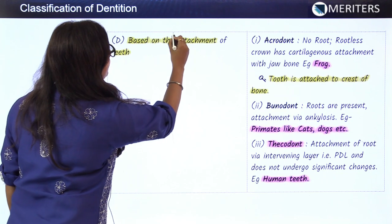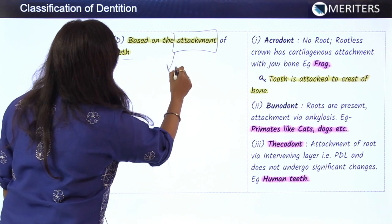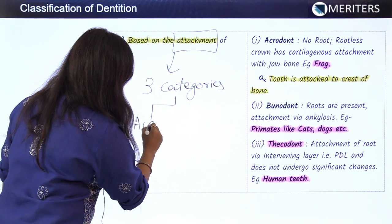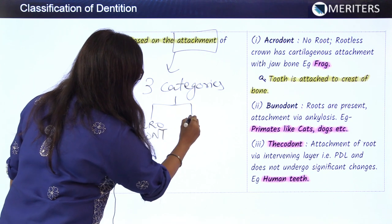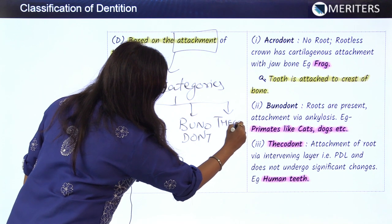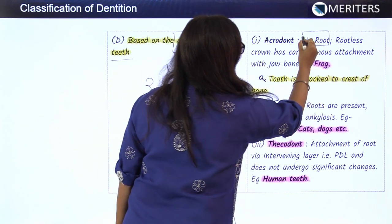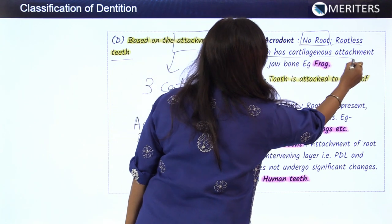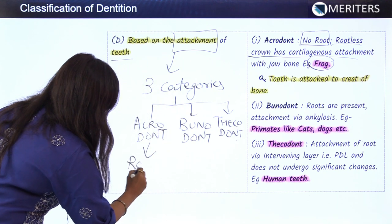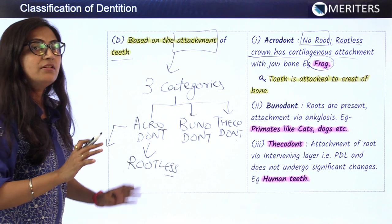Another point to classify dentition is based on the attachment of the teeth to surrounding structures. There are three categories: acrodont, pleurodont, and thecodont. Acrodont means no root — rootless teeth. Only the crown is present, with a cartilaginous attachment of the crown to the jawbone. Example is the frog. In acrodont, the tooth is attached to the crest of the bone via cartilage.